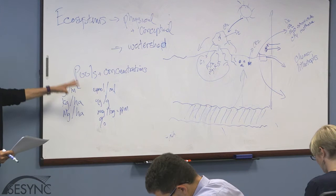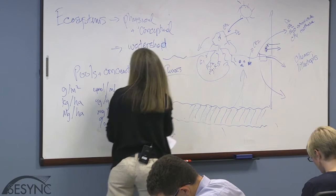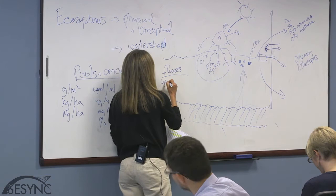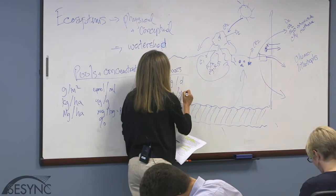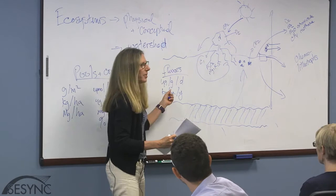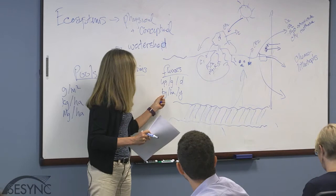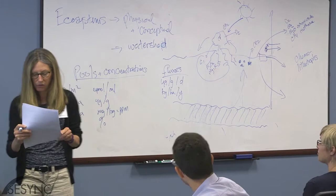Fluxes are per unit time — for example, micrograms per gram per day, or kilograms per hectare per year. You might ask: how much nitrogen is being deposited in ecosystems through anthropogenic activities? We'd measure that in kilograms of nitrogen per hectare of land area per year. Ecosystem ecologists tend to measure pools, concentrations, and fluxes, and differentiate between them.